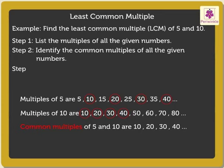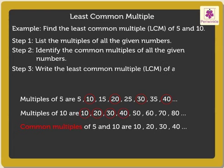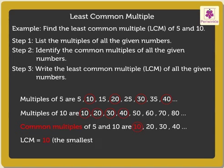Step 3: Write the least common multiple of all the given numbers. Here, the least common multiple is 10. Thus, LCM is 10, which is the smallest number of the common multiples.